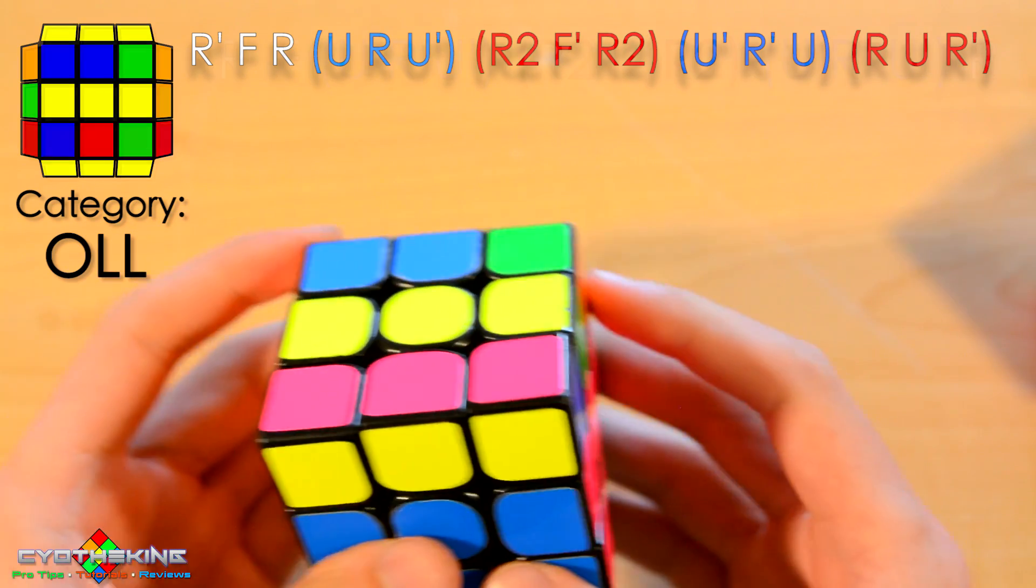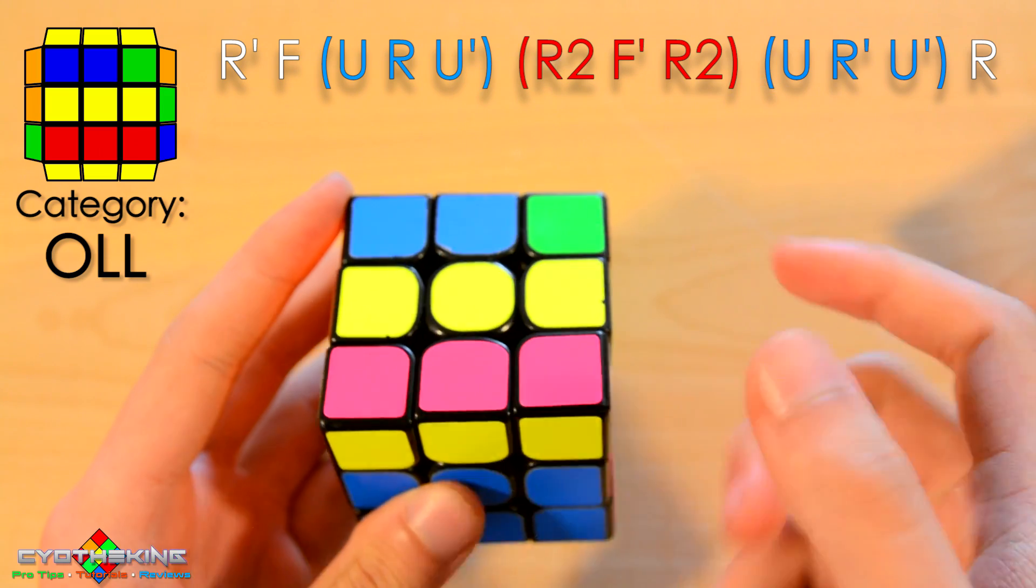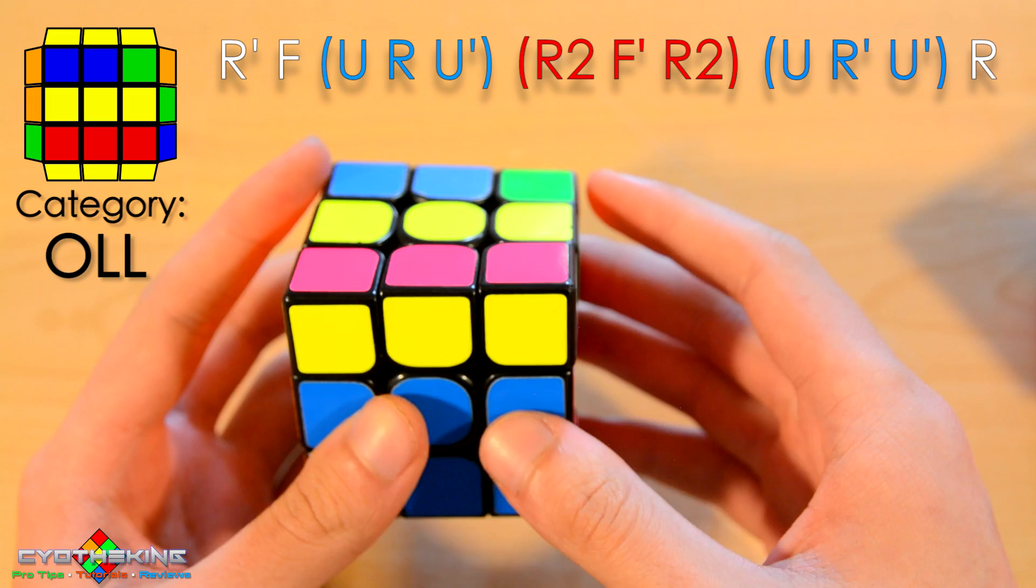There you go. And then the next one here is two opposite corners up here and then two corners right here that are the same and then you're going to do this.